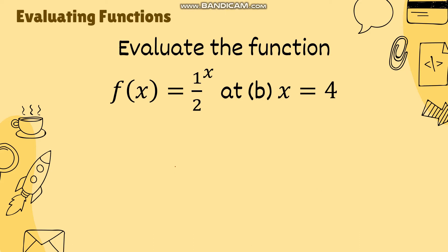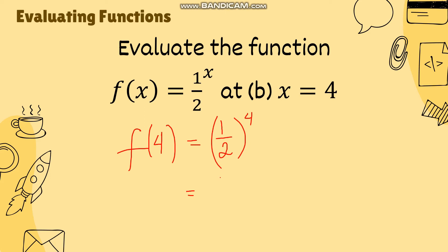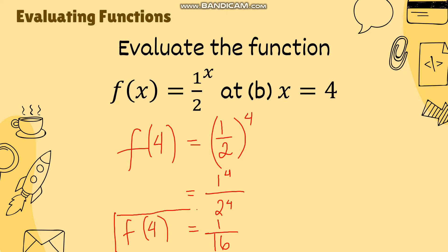Let's say we have x equal to 4. We do the same thing — substitute. So f(4) equals (1/2) raised to 4. Again, we are substituting the given value of x into the variable of the function. We distribute the exponent, giving us 1 raised to 4 over 2 raised to 4, which simplifies to 1 over 16. So if x equals 4, the corresponding output is 1/16.